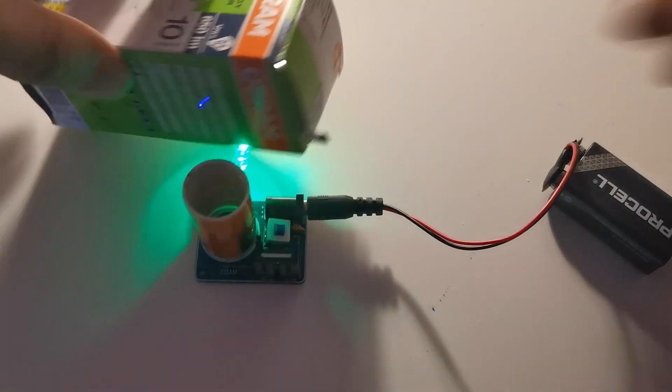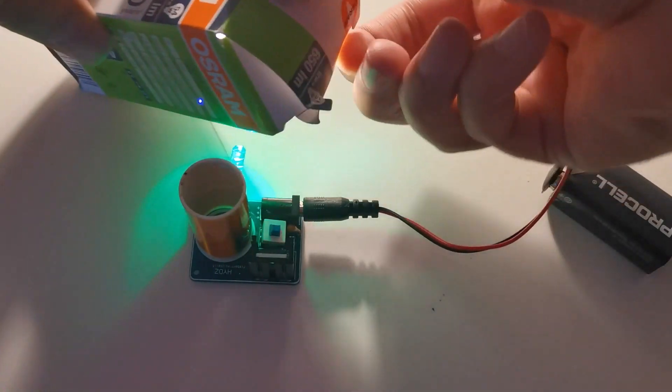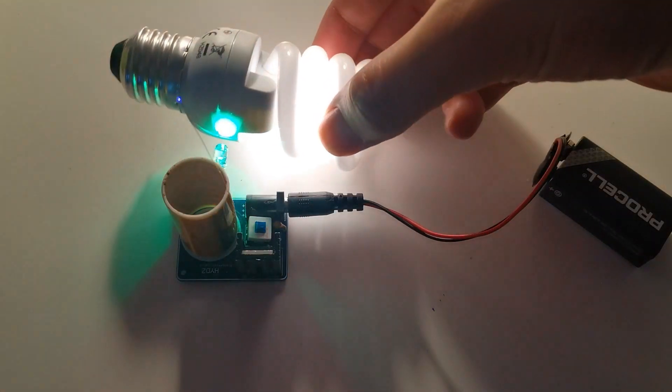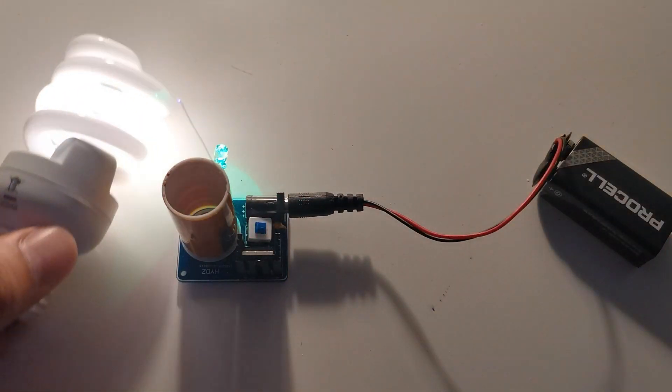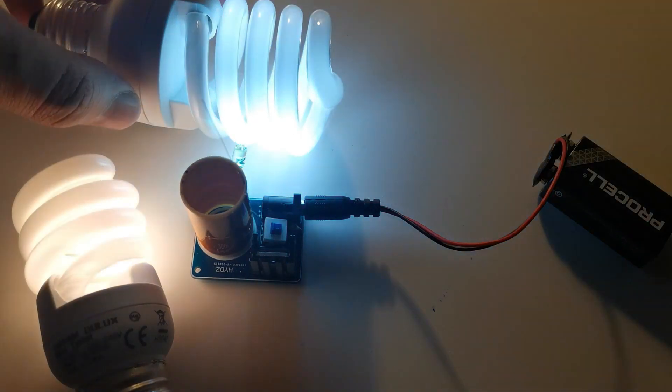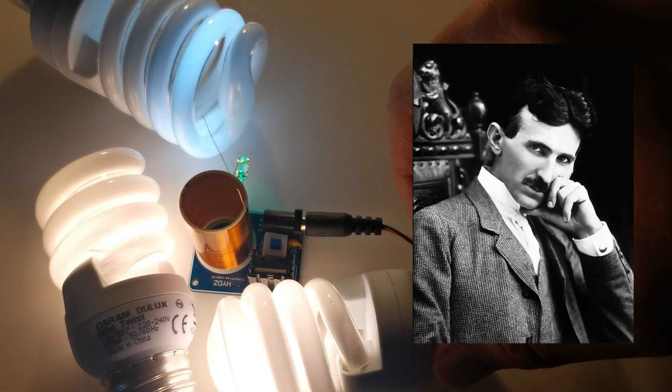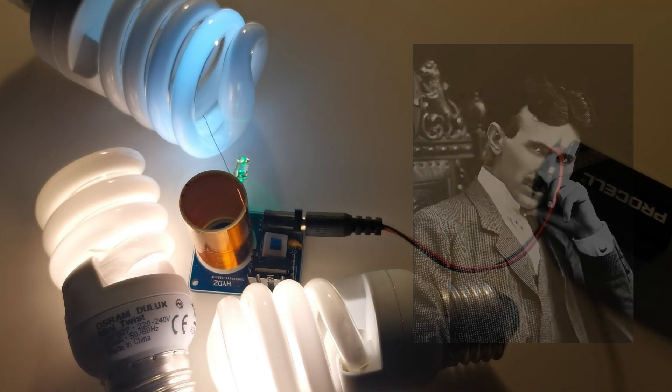You can light up fluorescent bulbs like that without touching anything. This coil has a special name: it is tesla coil. Nikola Tesla himself was experimenting different things with huge versions of it like wireless electricity.